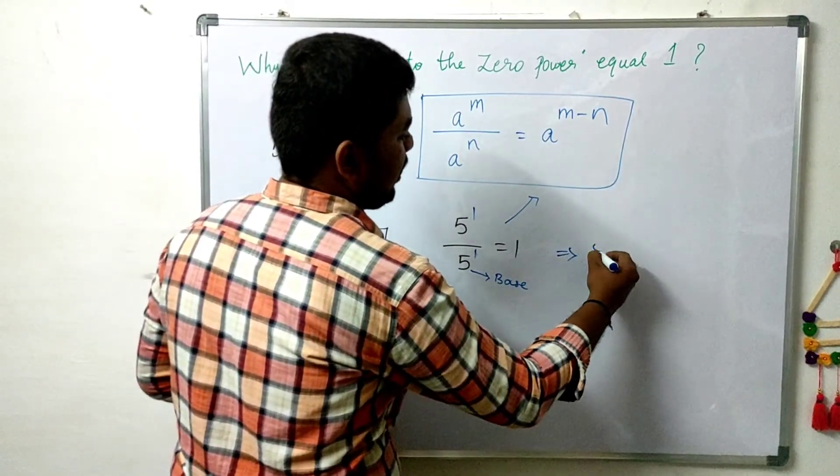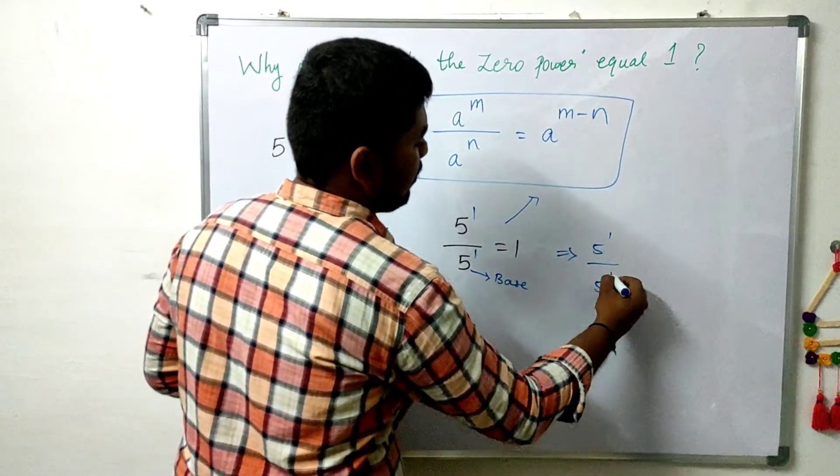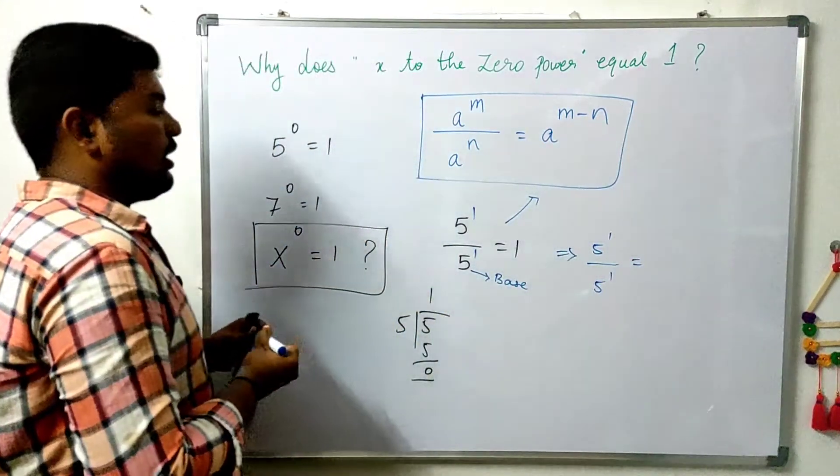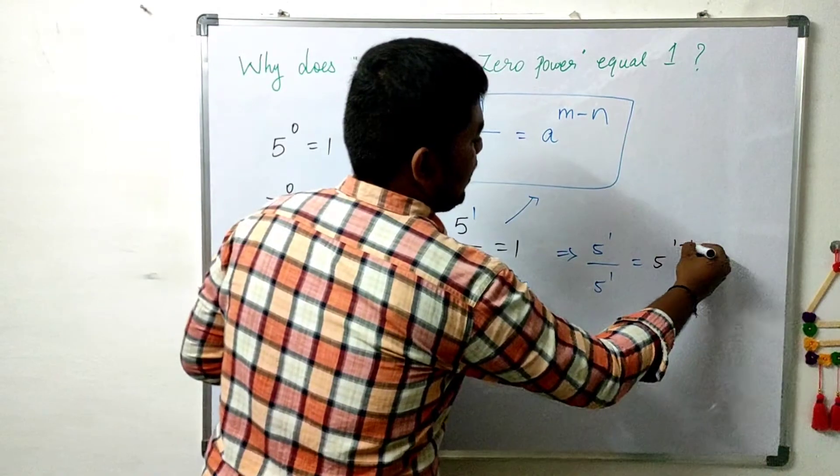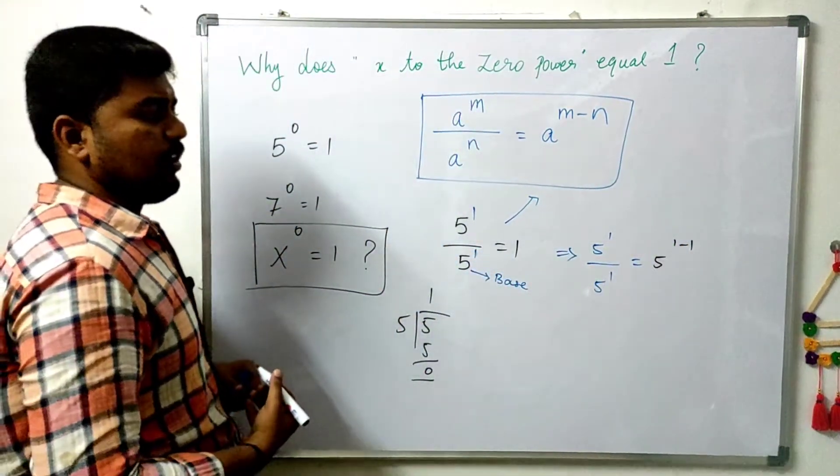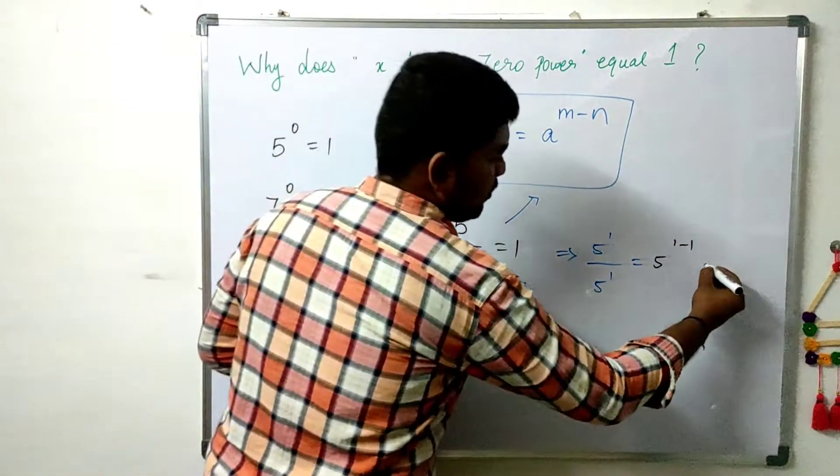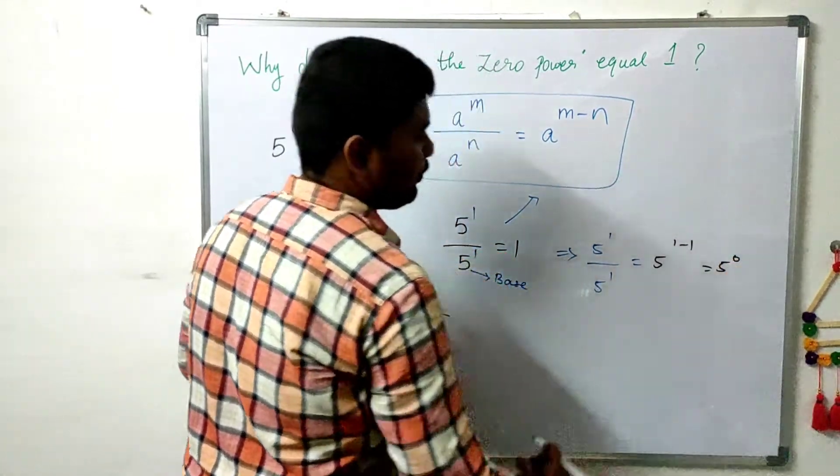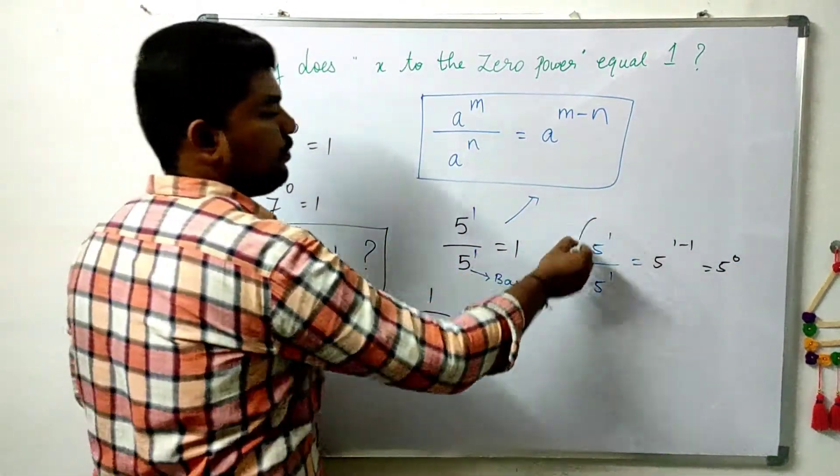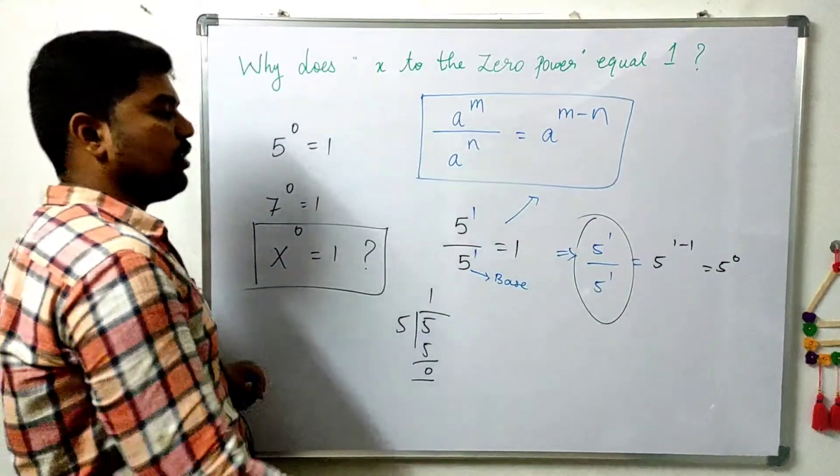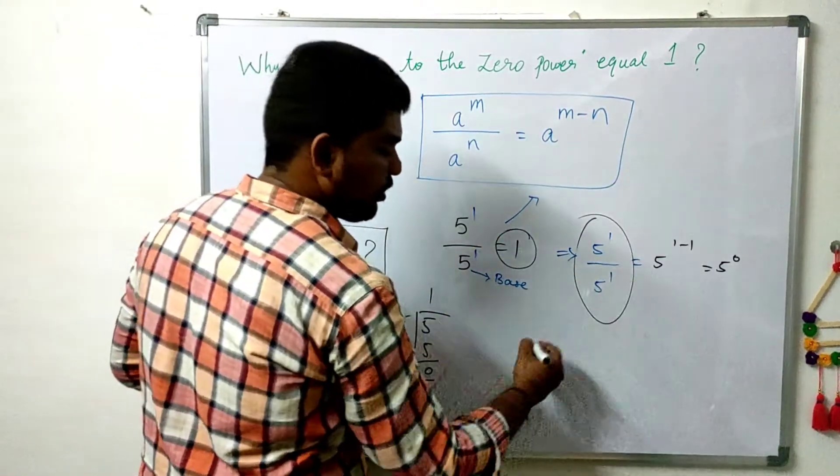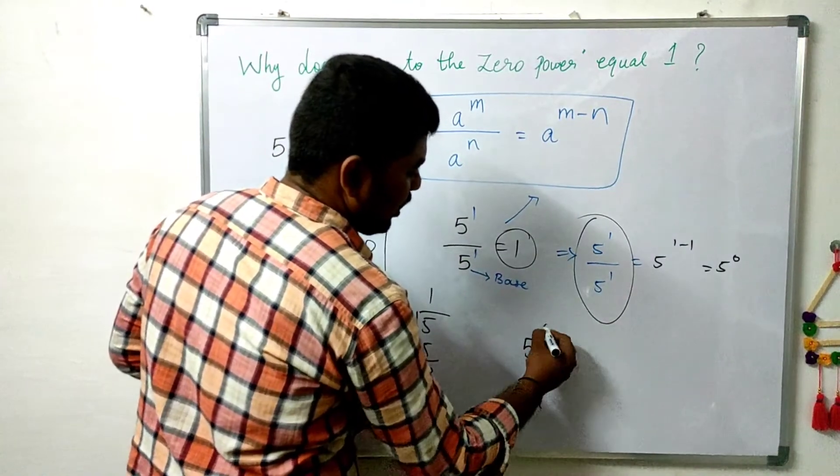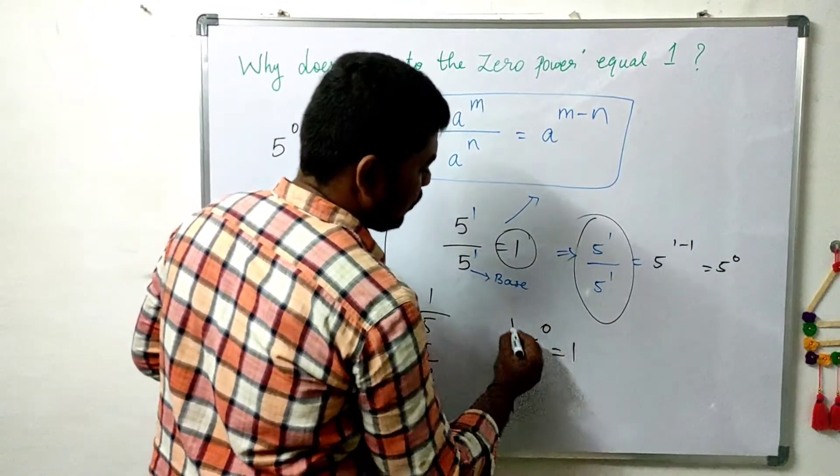Now we can change the sum. 5 power 1 divided by 5 power 1 means we can rewrite as 5 power 1 minus 1. Clear? 5 power 1 minus 1 means 5 power 0. Already we have derived the answer for 5 divided by 5, that is 1. 5 power 1 divided by 5 power 1 is 5 power 0. 5 power 0 is 1.